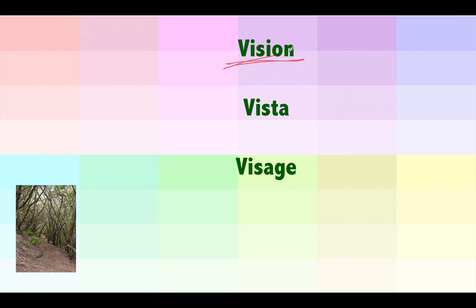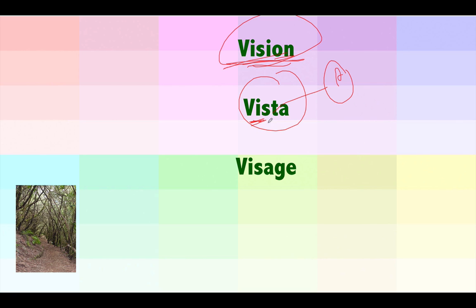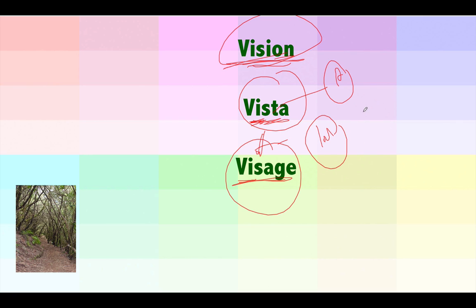Vision means your eyesight — your ability to see, whether perfect or not. A related word is vista: 'vis' again means to see. Vista means a very beautiful view, like a panoramic scene seen between trees. You may remember Windows Vista. Another related word is visage — derived from vision. Visage means your looks, your aesthetics, how your face appears, your outer personality — whether you are presentable or not.